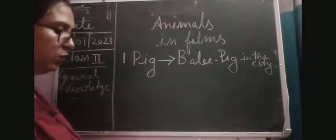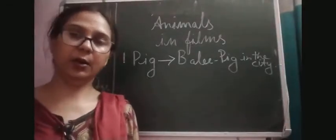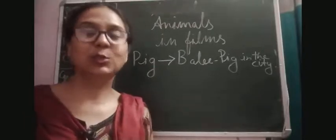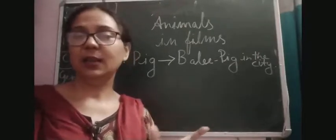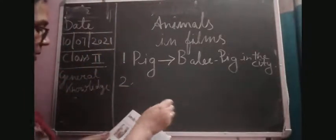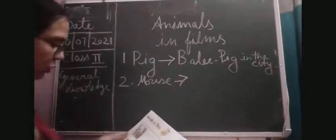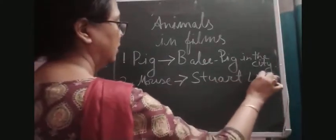Moving to the second number — a little sweet mouse. Here you can see a mouse, which played a very important role. The film is titled after that particular animal: Stuart Little. In that movie there is a white-colored mouse, and he played a wonderful role. So number two is mouse — Stuart Little.